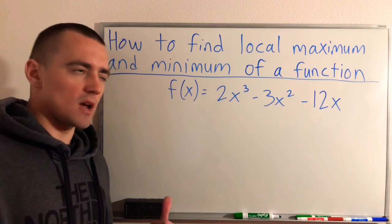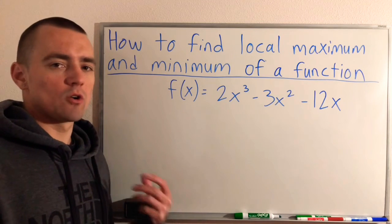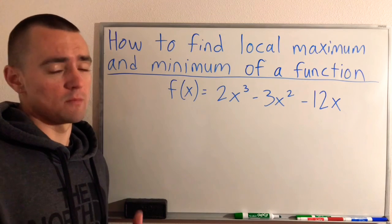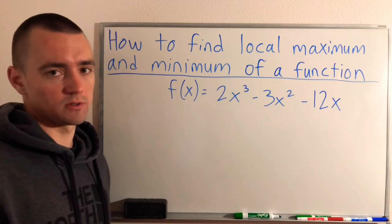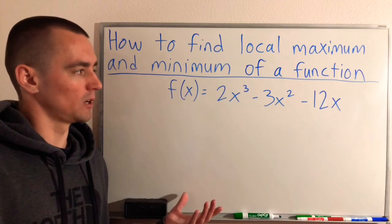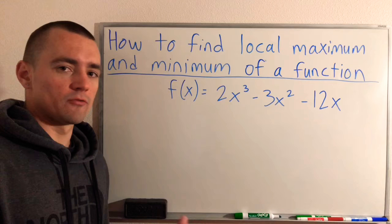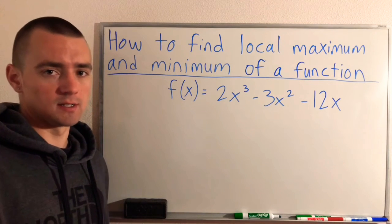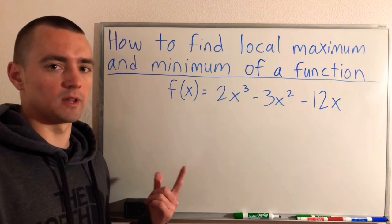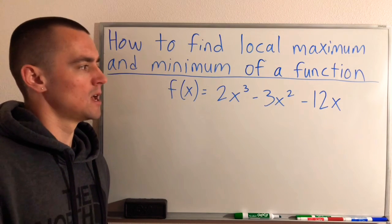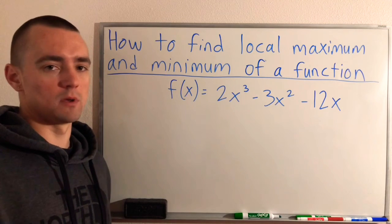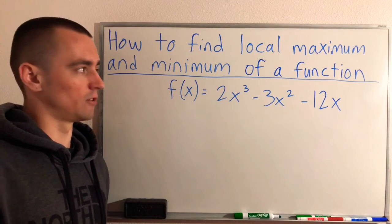Hey guys, Jake here coming at you with another math problem today. I'm going to be going over how to find the local maximum and minimum of a function, or the maximum and minimum values if there's multiple. I'm going to be showing you how to do that with this example here. This is building off of finding the increasing and decreasing intervals of a function, which I talked about a couple days ago — I'll put a link to that up here. Because that is a big part of the process for finding the local maximum and minimum values of a function.